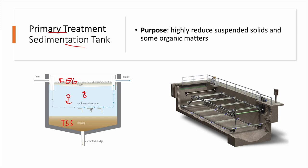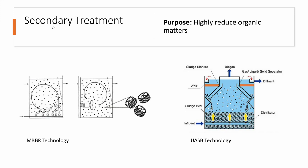The cleared water then moves on to the secondary phase. What you are seeing here is a rectangular primary clarifier equipped with a mechanical scraper. These bars move the accumulated sludge into a hopper, where it is later pumped for further treatment. This configuration is typically used for large wastewater treatment plants. We also have a circular configuration for primary clarifiers.